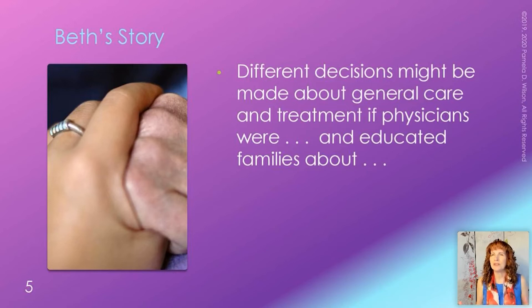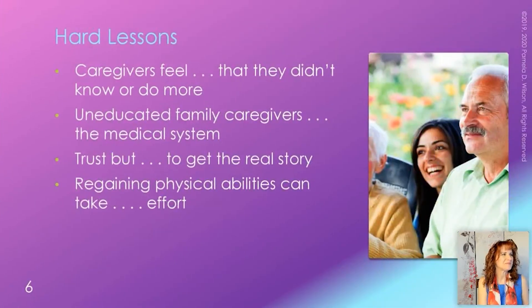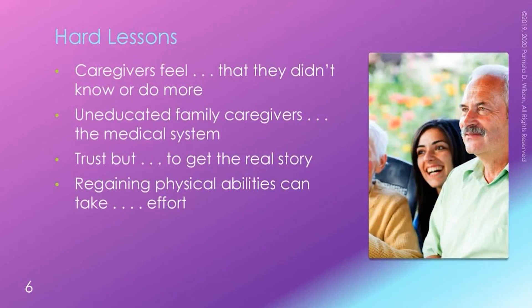These are important questions to ask when health events happen, and it's important to be proactive because the health of your elderly parent can change in an instant. These are all hard lessons to learn. Family members die from medical mistakes, from poor medical recommendations. Caregivers feel guilty that they didn't know or do more. This was the situation in my own family and why I'm such a strong advocate for caregivers becoming educated and proactive. If I knew over 20 years ago what I know today, my mother's life might have been different.